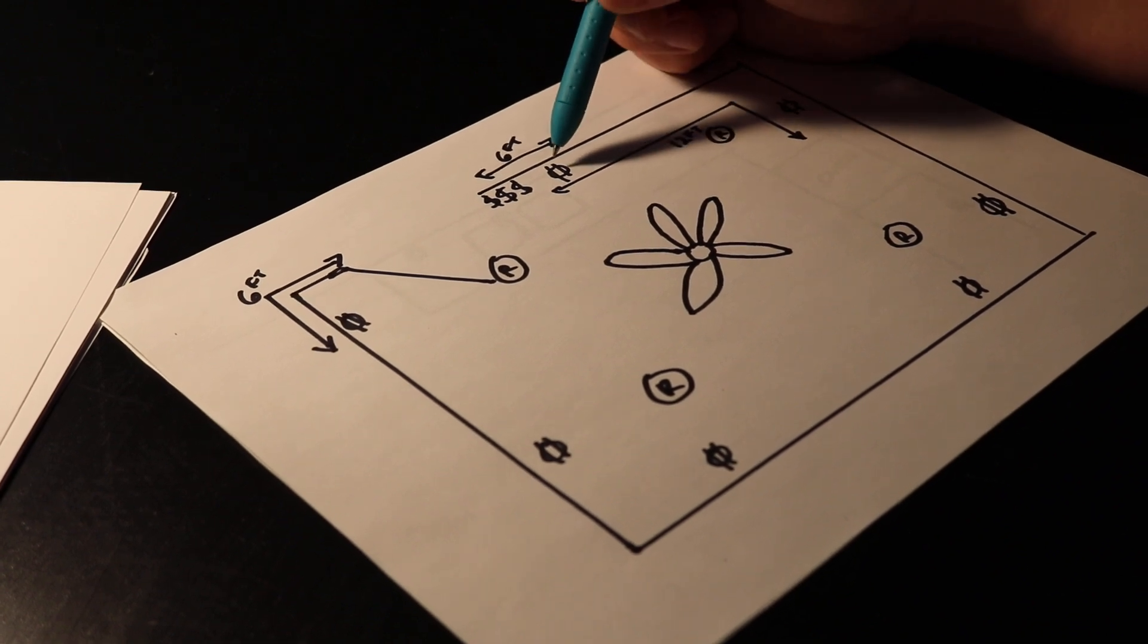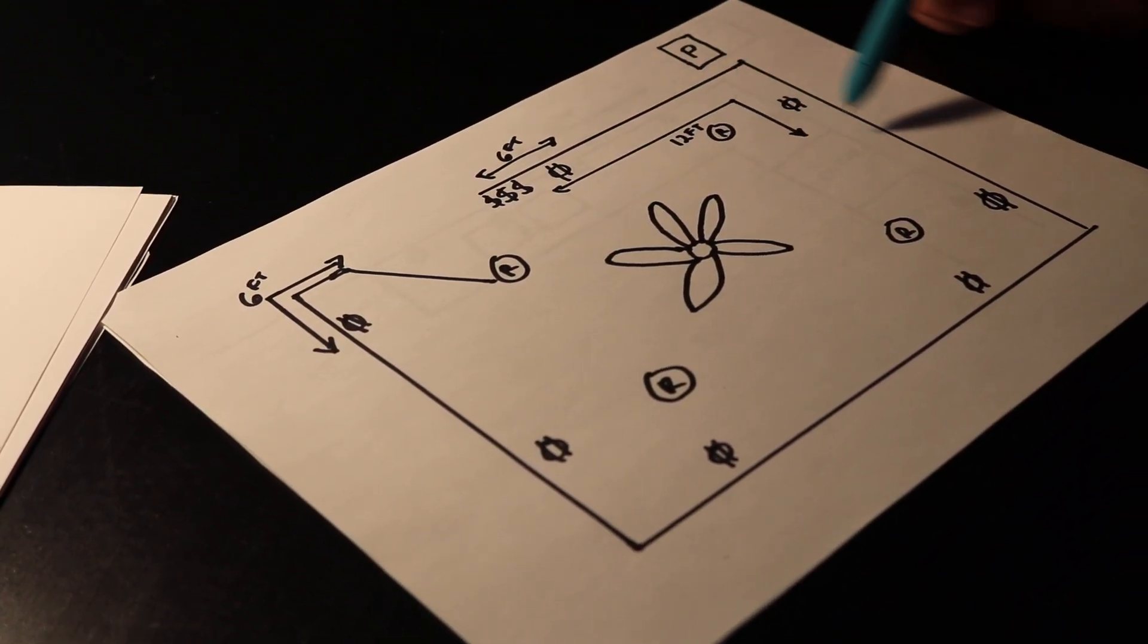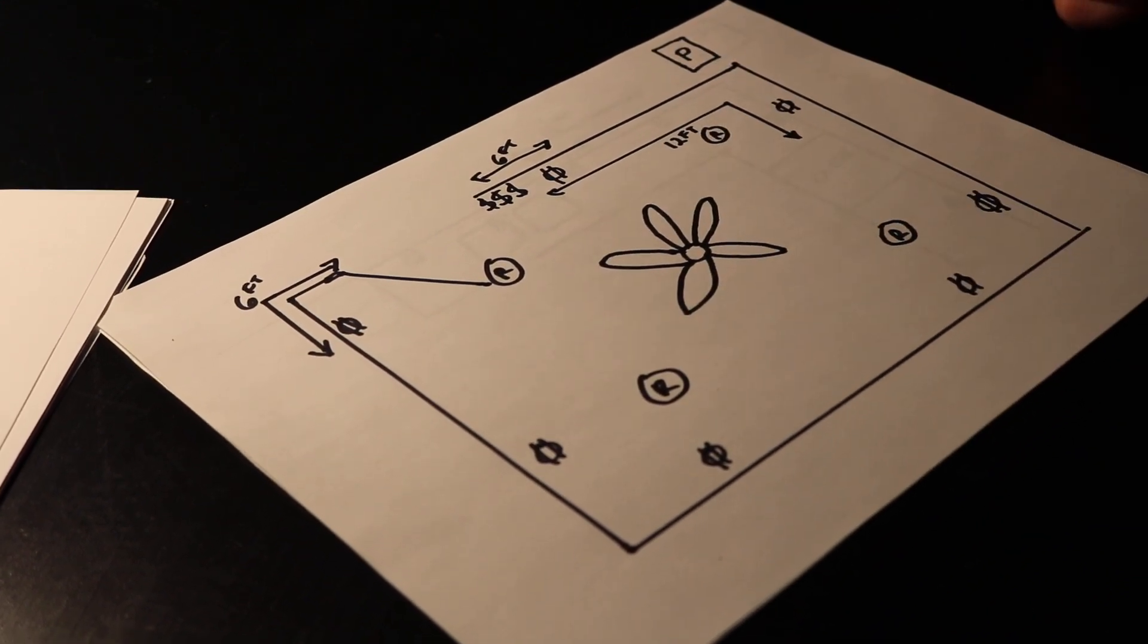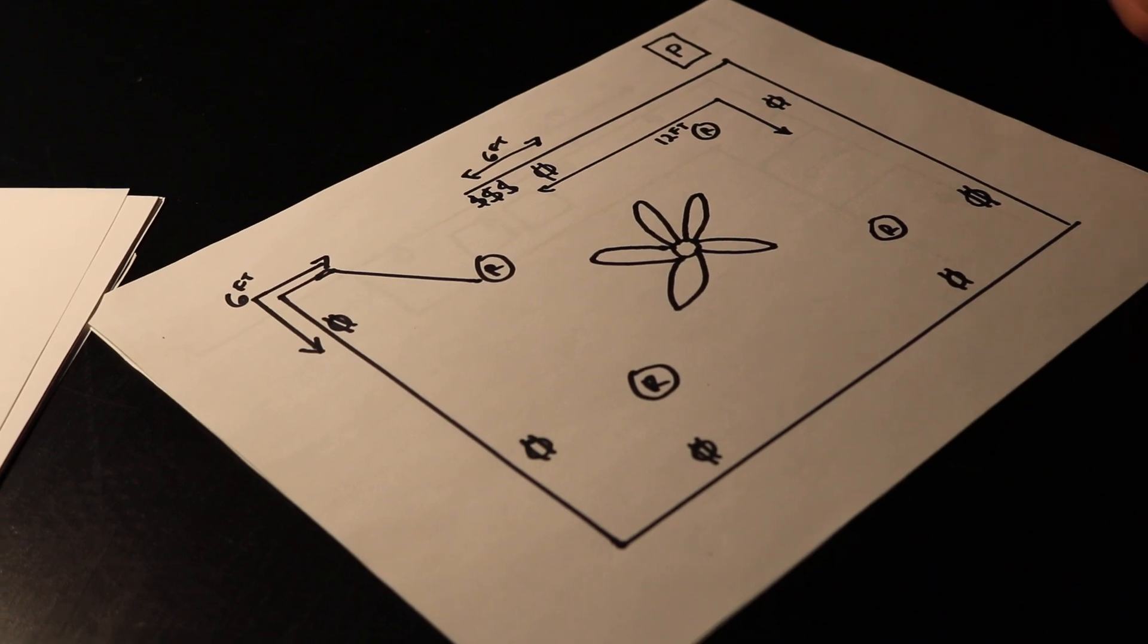After that initial outlet you'll need another outlet within 12 foot going all the way around the room. So that's the rule, six foot from your edge, every 12 foot after that for your outlet spacing.